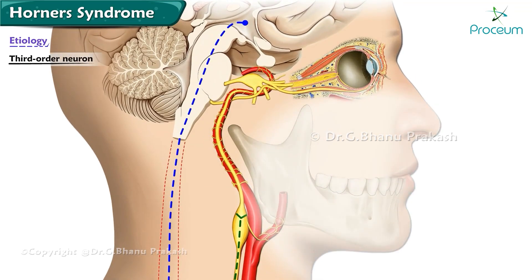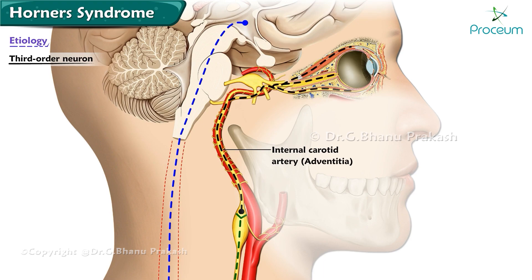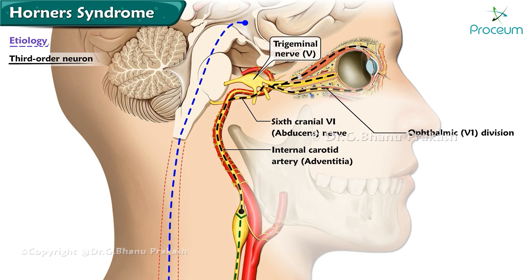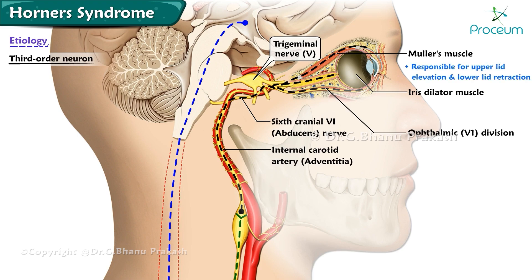The third-order neuron ascends within the adventitia of the internal carotid artery through the cavernous sinus, where it is in close relation to the sixth cranial nerve. The oculosympathetic pathway then joins the ophthalmic division of the fifth cranial nerve in the orbit and the eye. The oculosympathetic fibers innervate the iris dilator muscle as well as Müller's muscle — a small smooth muscle in the eyelids responsible for a minor portion of upper lid elevation and lower lid retraction.